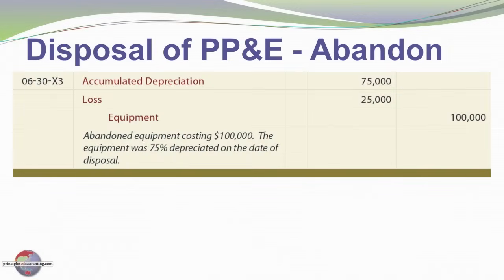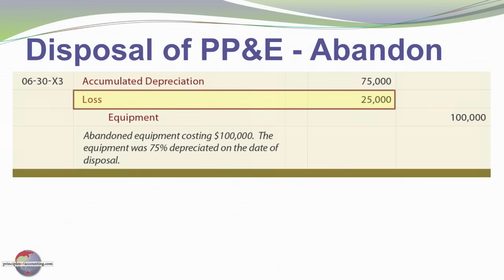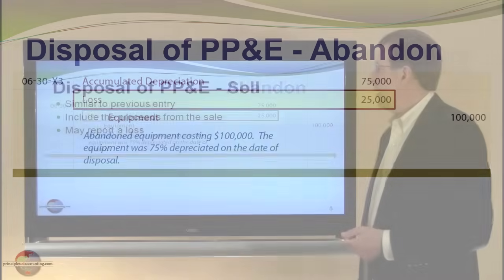If we're simply abandoning an asset, we'll remove the asset from the books. Here I'm crediting the equipment $100,000 along with its related accumulated depreciation of $75,000. It had a net book value or carrying value of $25,000, and since we're simply throwing away the asset, we need a debit to balance the entry. That's a loss on the abandonment of the equipment.